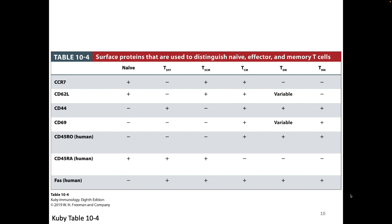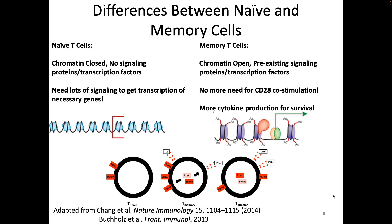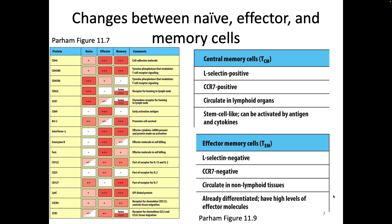We can distinguish all these different memory subtypes based on their expression of different markers by flow cytometry, and that's how many of them have been described. The central memories, which go to secondary lymphoid organs mostly, have the trafficking molecules to go to secondary lymphoid organs. The ones that don't go to secondary lymphoid organs as much don't have those trafficking molecules. The amount of differentiation and how much signal they need to be triggered are also different.